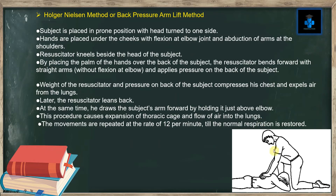In the Holger Nelson method, the subject is placed in the prone position with the head turned to one side. Hands are placed under the cheeks with flexion at the elbow joint and abduction of the arms at the shoulders. The resuscitator kneels beside the head of the subject.